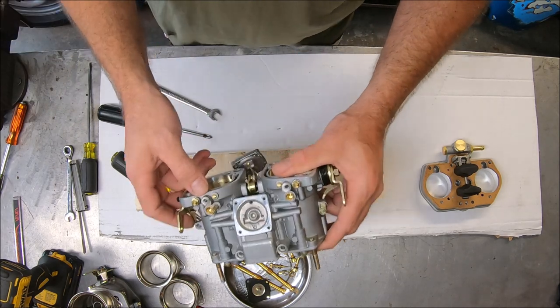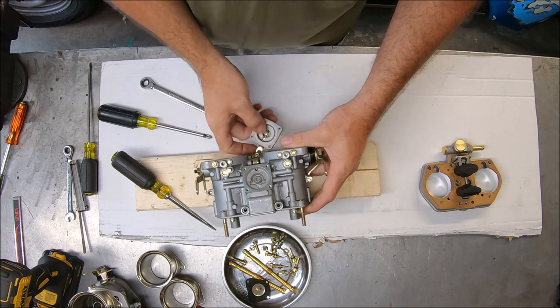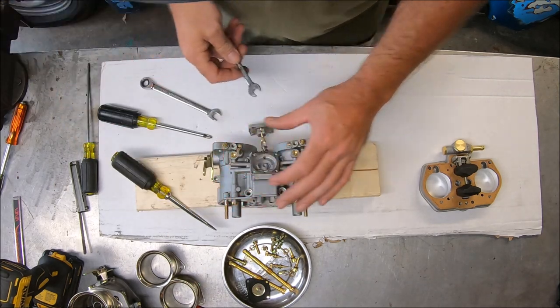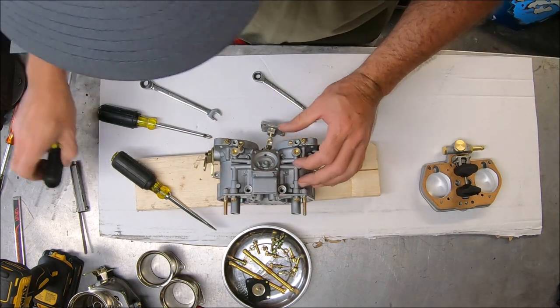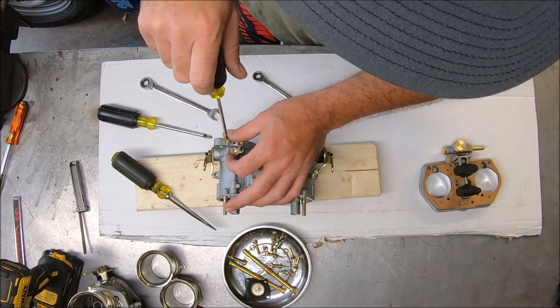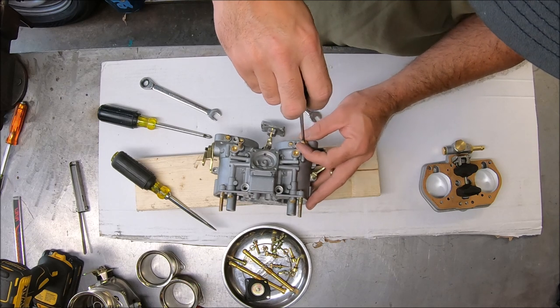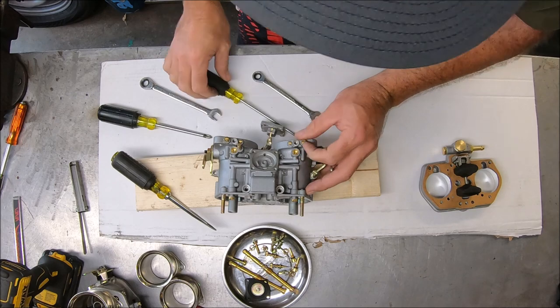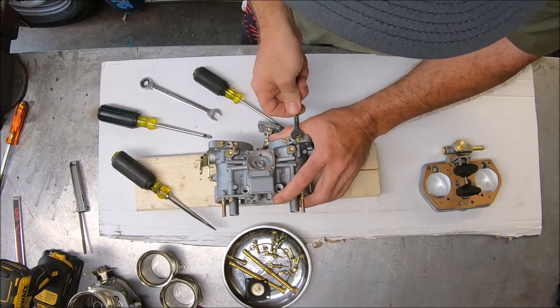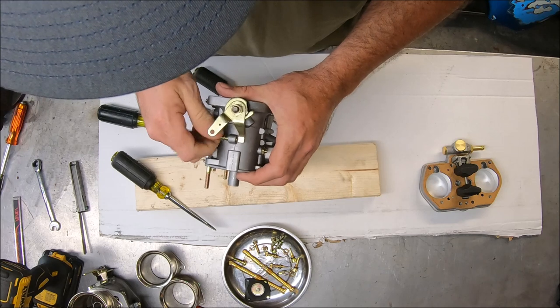These are your air bypass screws. We've already got our mixer screw out. But right here is your air bypass screw. We need to make sure that those are in and seated. So we need the 8 millimeter. Loosen those up. And you don't want these tight tight. You just want them snug. Just bring them down. You feel them snug. That's it. There we go. So those are good.